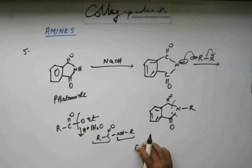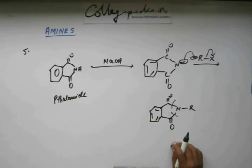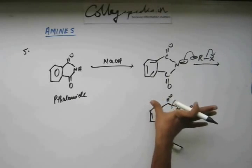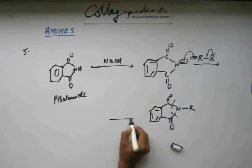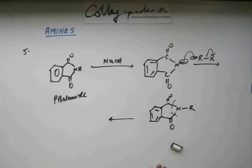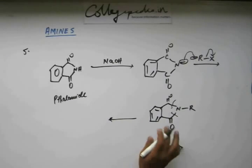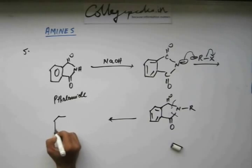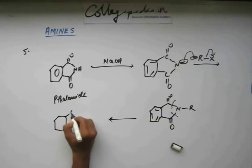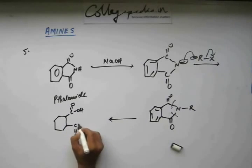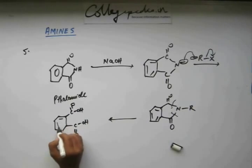And because the system is basic, because you added base into the system before adding this RX, or if you are adding a base again, or this time you can also carry out acid-catalyzed hydrolysis. So if you are adding an acid or if you are adding a base, whatever it is, now this will come out. If you are carrying out acid-catalyzed hydrolysis, this will be neutral phthalic acid.